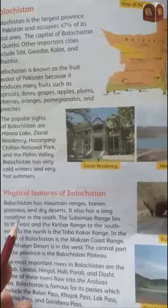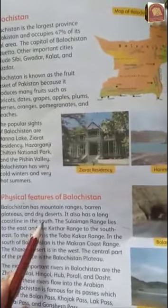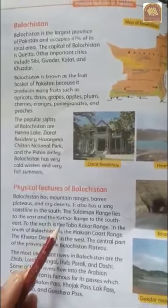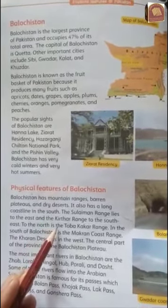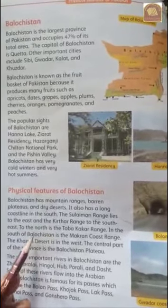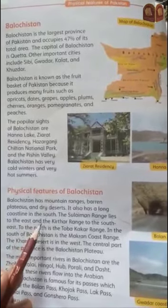There are mountains, barren plateaus, dry lands, and deserts in Balochistan. There is also a long coastline in the south.